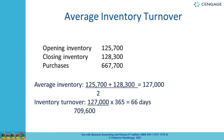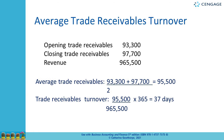We calculate average inventory first by adding opening and closing inventory and dividing by two, giving us an average inventory of £127,000. We then put this figure into the formula for inventory turnover days — average inventory divided by purchases, times 365 — which gives us 66 days as our inventory turnover period.